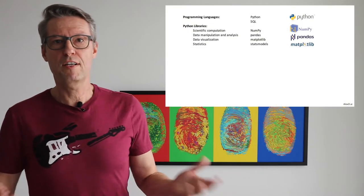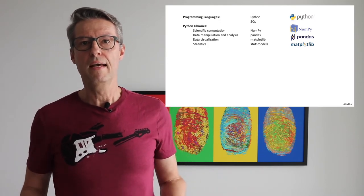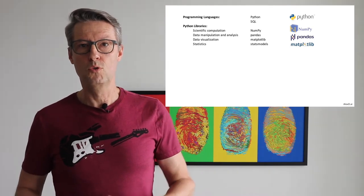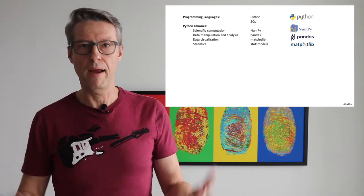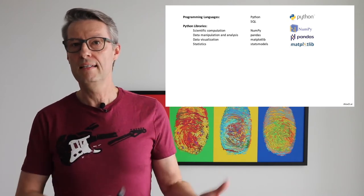If you decide to use Python, you have available some different libraries with code that are ready to be used. What kinds of libraries are so common and so popular for data science in the Python environment? First of all, NumPy. NumPy is a scientific computation library. You use it to build vectors, to build arrays, to build tensors, and it's very common to be used in the data science area.